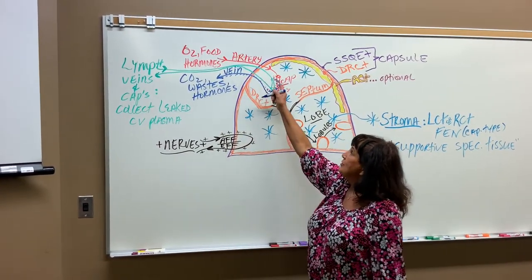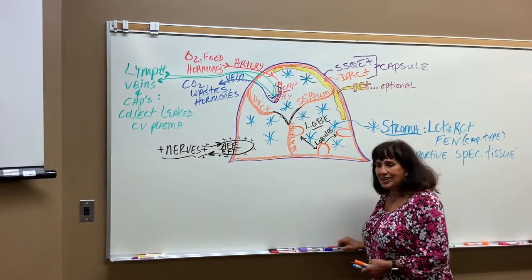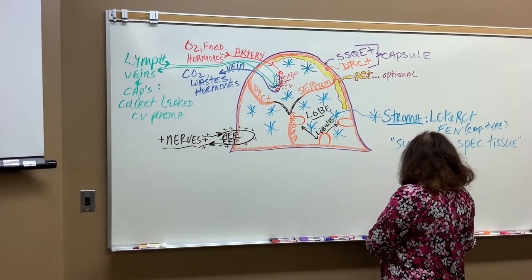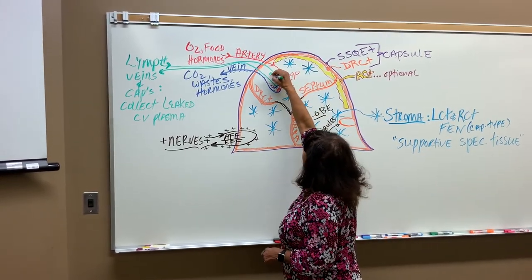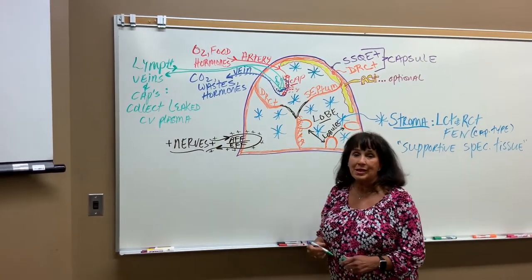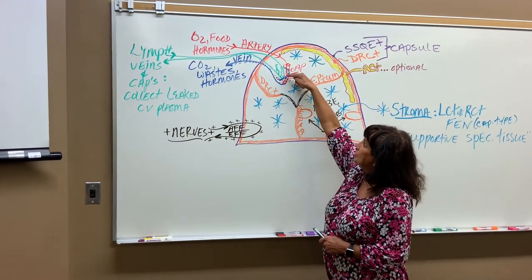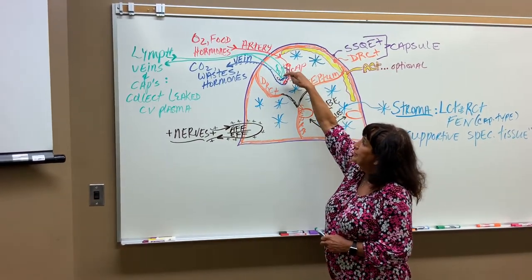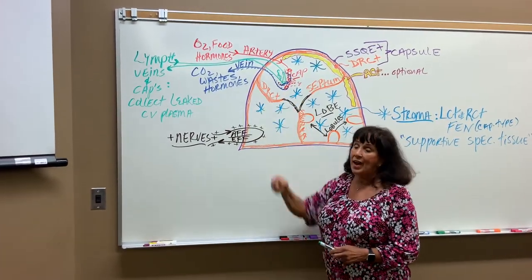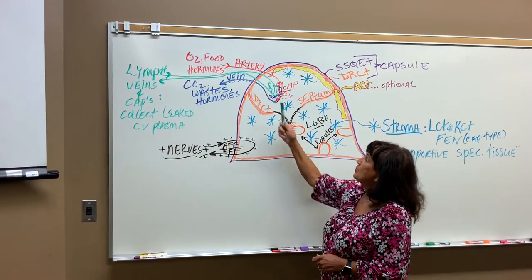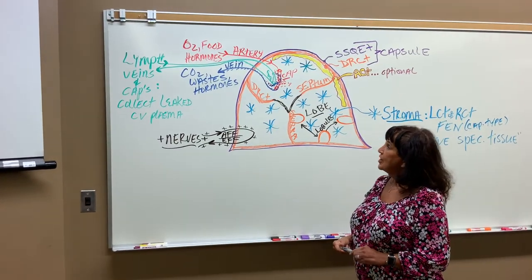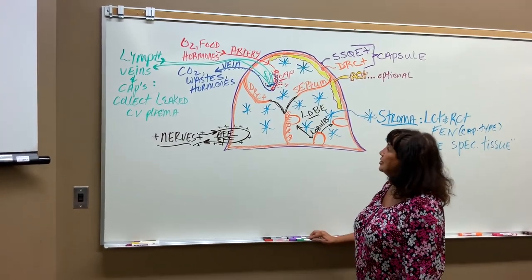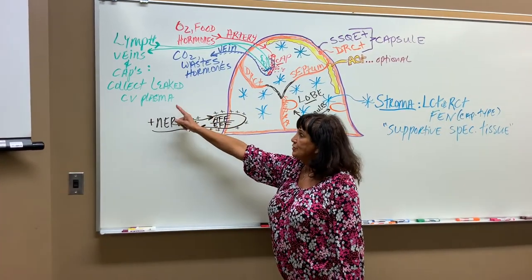We've also got a green tube — the green tube is called a lymphatic vein. A lymphatic vein comes in and becomes a lymphatic capillary. This lymphatic capillary is going to collect leaked plasma. Not all plasma goes back into the cardiovascular capillary — the leftovers go into the lymphatic capillary, and then it takes this and sends it back into your cardiovascular system. Lymphatic veins will collect leaked cardiovascular plasma.